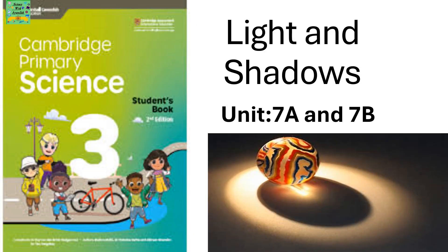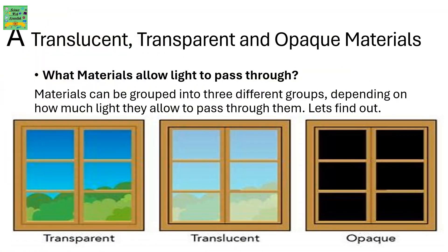Light and shadows, Unit 7a and 7b. Translucent, transparent and opaque materials. What materials allow light to pass through them? Materials can be grouped into three different groups depending on how much light they allow to pass through them. Let's find out.